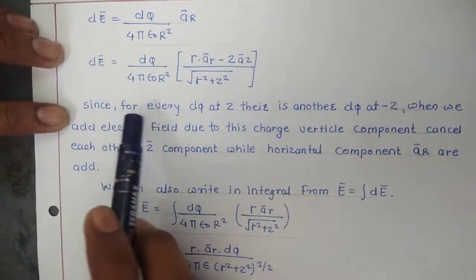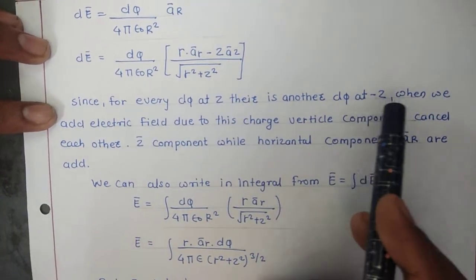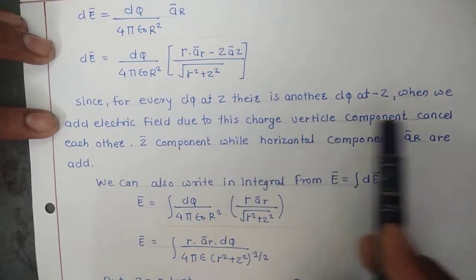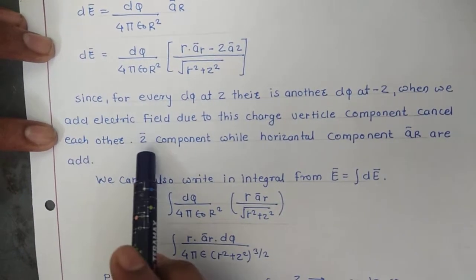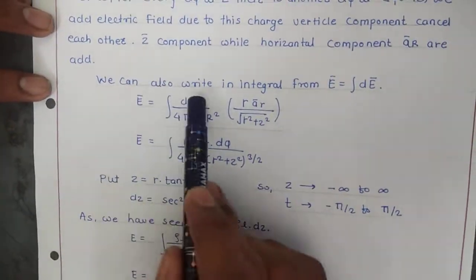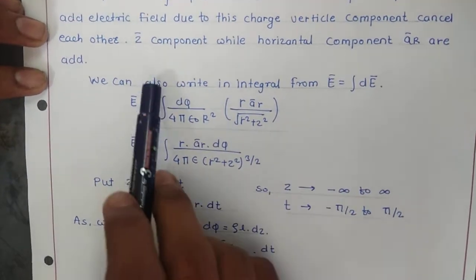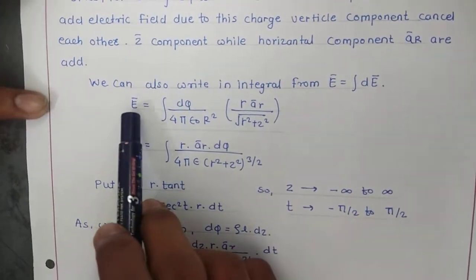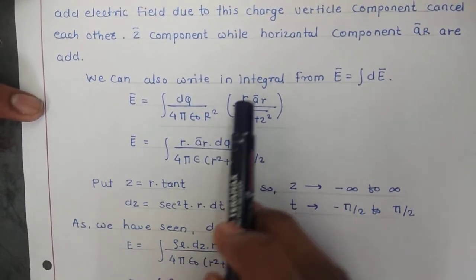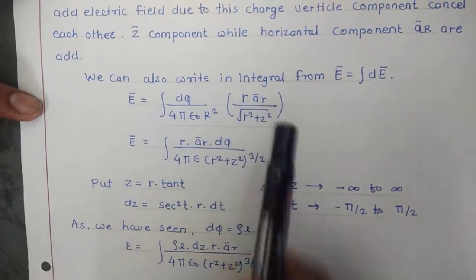Since for every DQ at Z there is another DQ at minus Z, when we add the electrical field due to these charges the vertical Z-component gets cancelled while the horizontal component AR is added. We can also write E as the integral of DE. Then the intensity becomes E equal to the integration of DQ upon 4pi epsilon-0, times R upon (R-squared plus Z-squared) to the power 3/2, times AR.